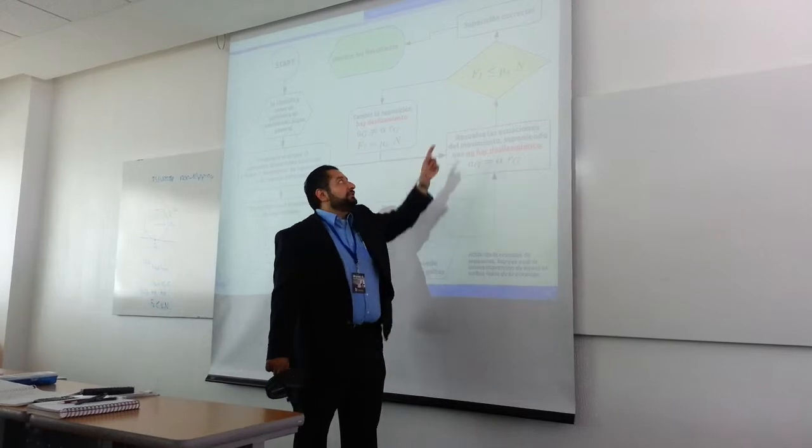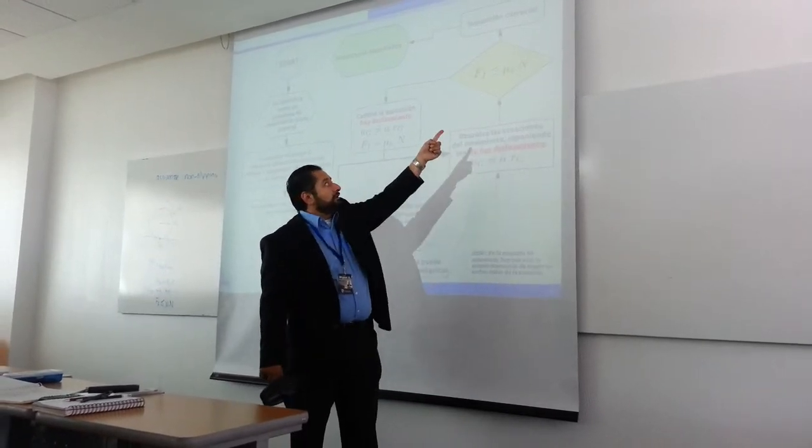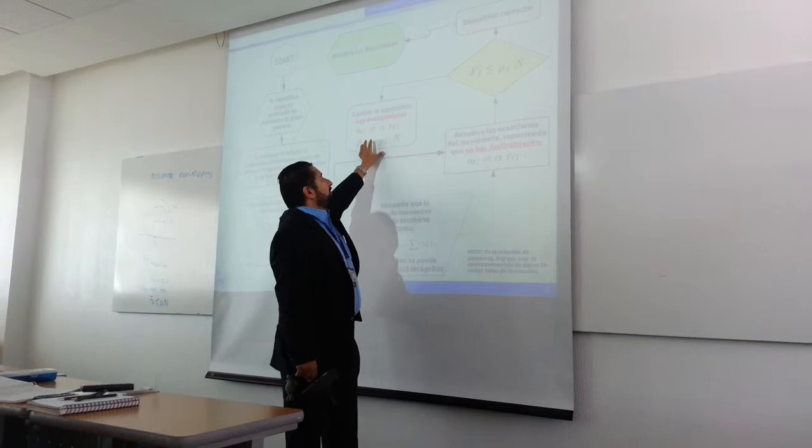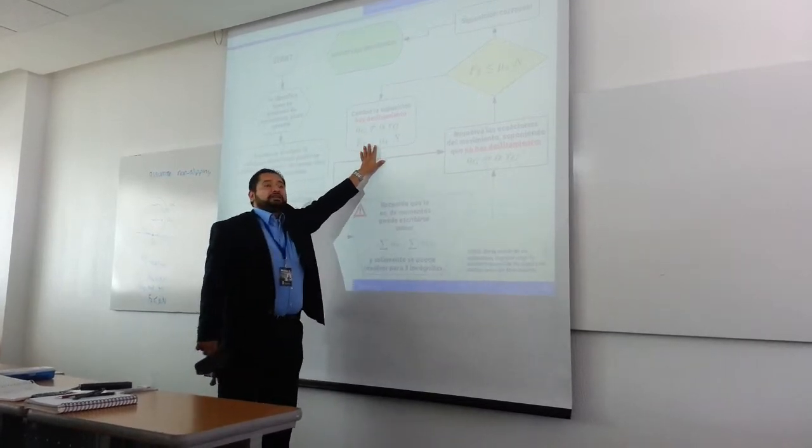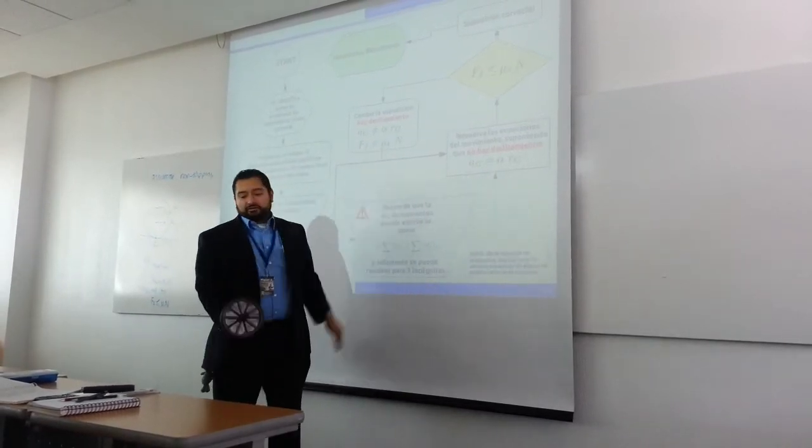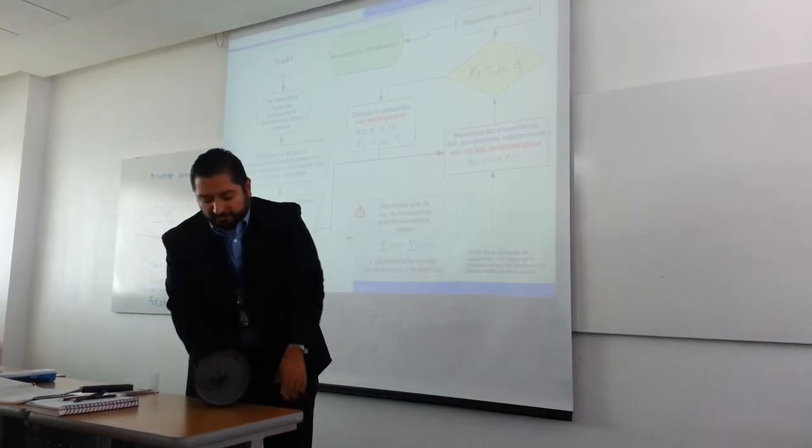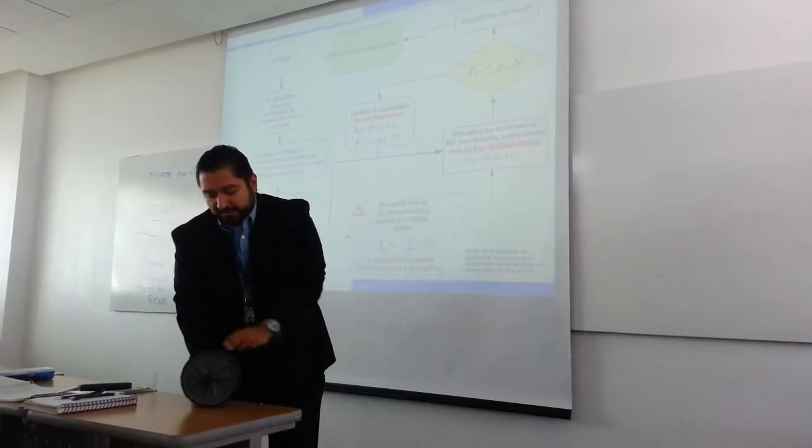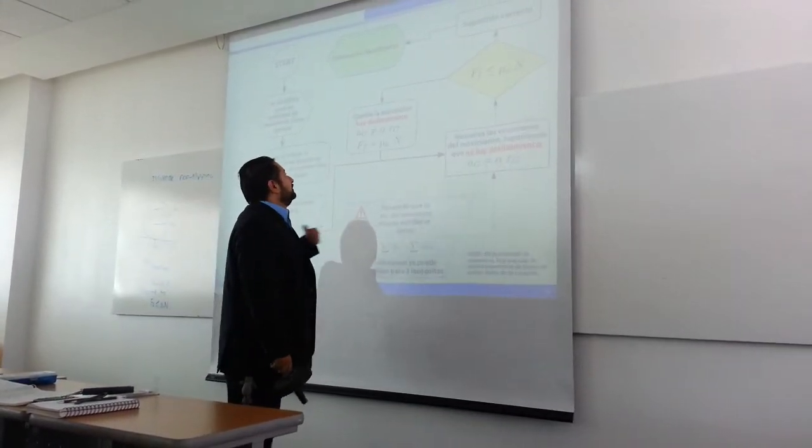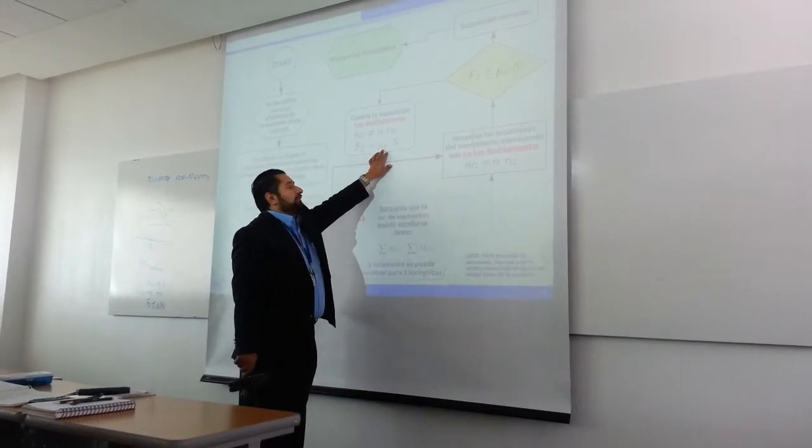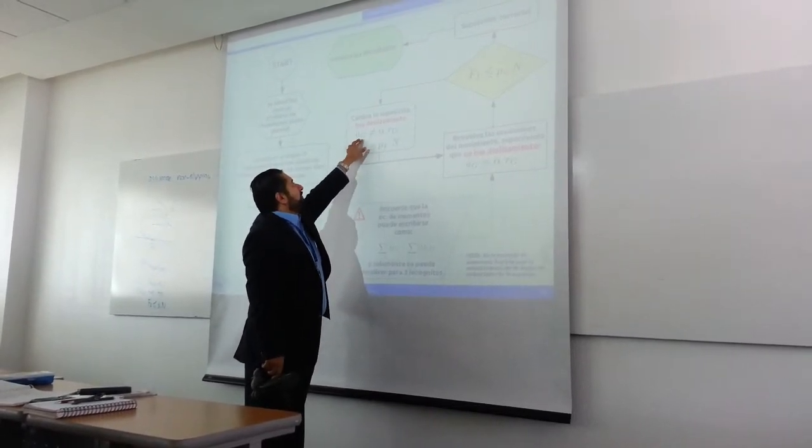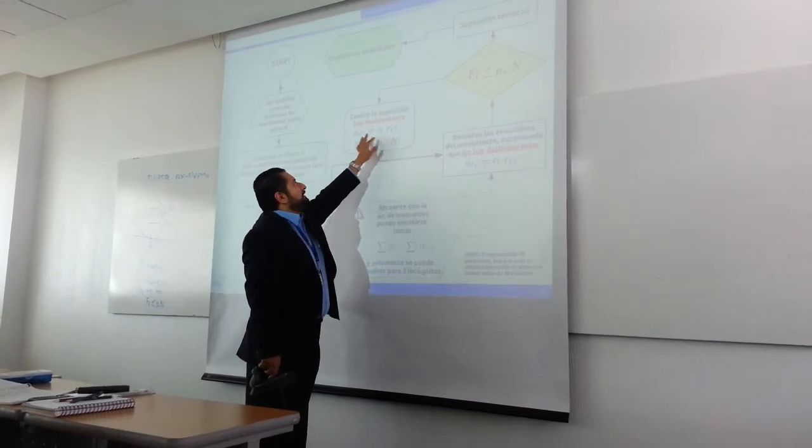The problem is not complete if you don't check the assumption. But what happens if the friction force is greater than mu S N? Then you need to change the assumption. And in this case, you already know that this thing is slipping.